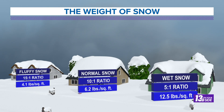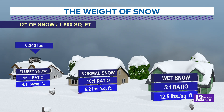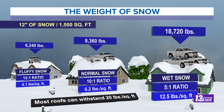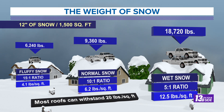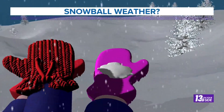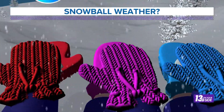Take a look at these examples: fluffy stuff on the left, normal stuff in the middle, heavy stuff on the right. The weight on the left is not even close to the weight with the heavier snowfall on the right. In fact, it could be an excess of 10,000 pounds more on your roof with that wet snowfall, so do keep that in mind.